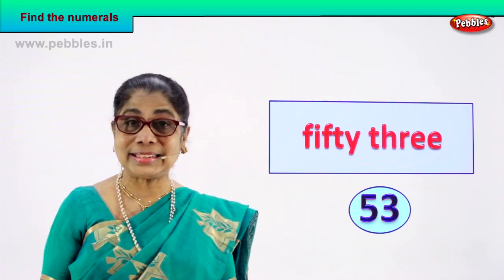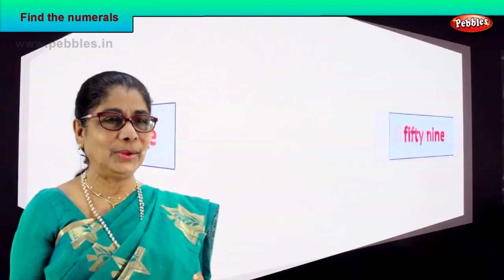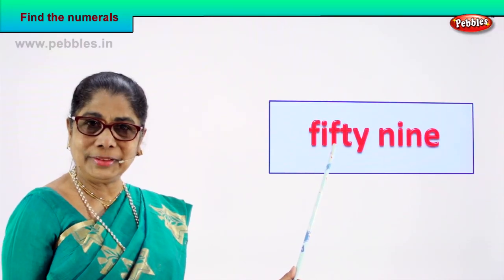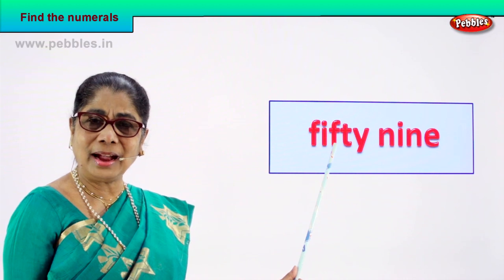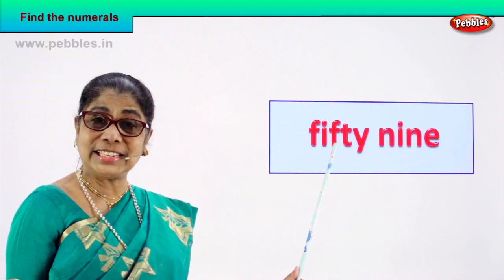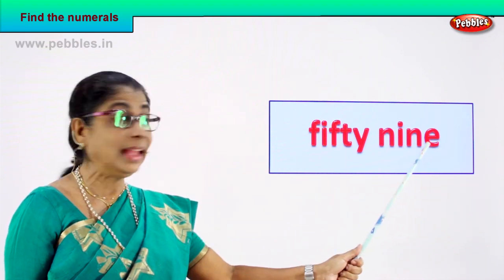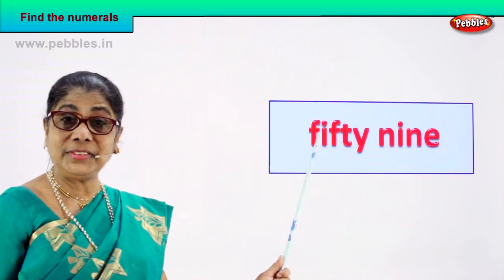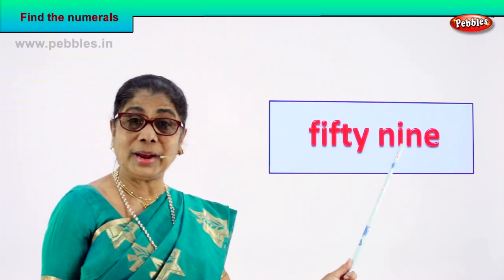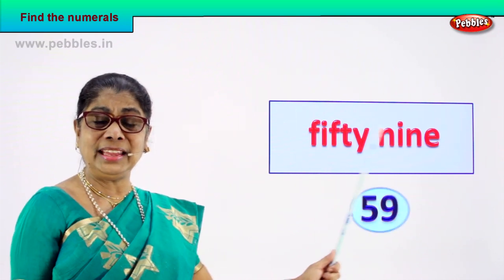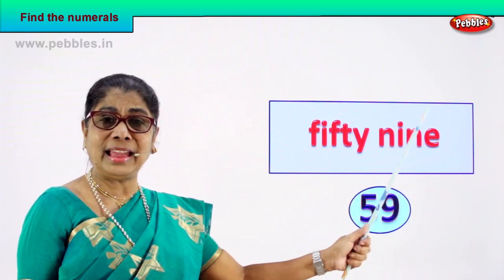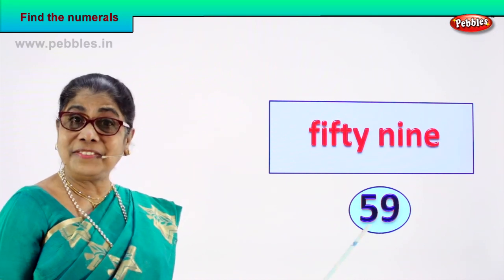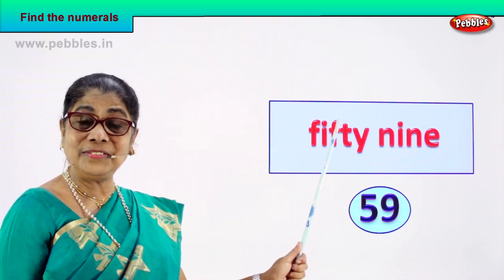Shall we take our next number name? Look — read with me. F-I-F-T-Y, 50, N-I-N-E, 9. So that is 59. How do you write the numeral? 5 and 9 — 59. Are you enjoying the exercise? Good!